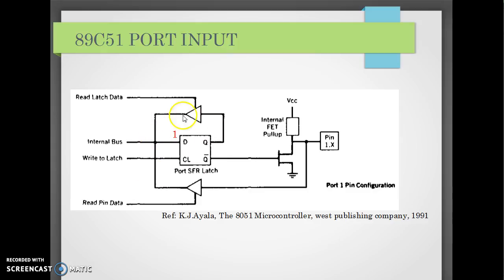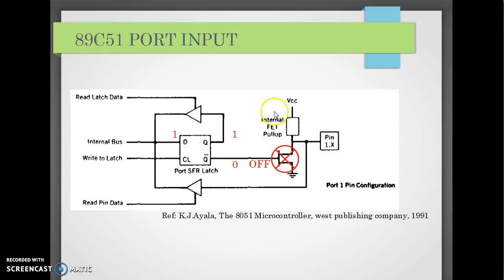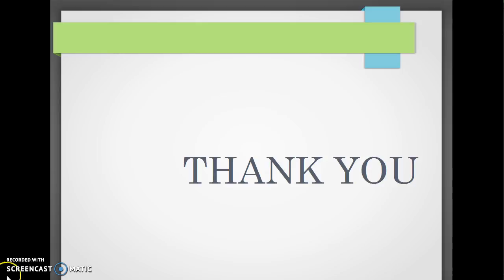To configure the port as input, we write logic 1 to the internal data latch. When we write 1 to this internal latch, the transistor turns off, which disconnects the entire internal circuit. The pin will then be pulled up by the internal active pull-up, and we can read the data from the pin using the data input instructions. This is how the port of the 89C51 works.